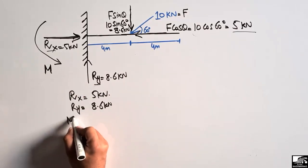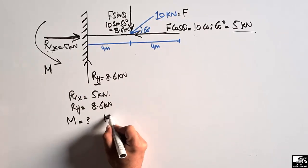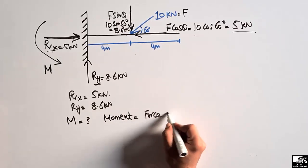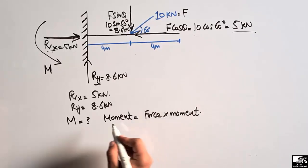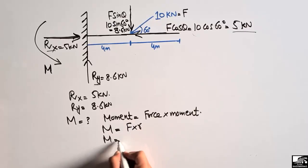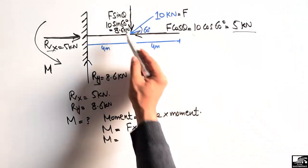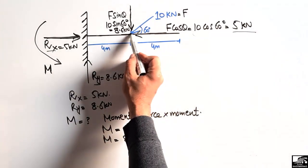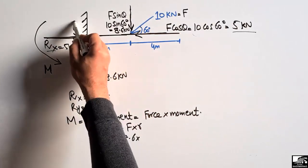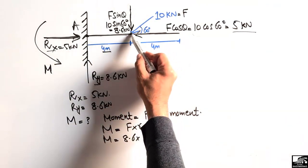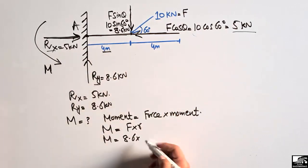Now the question is how to find the moment M. The moment is found by the formula: M = Force × moment arm. To find moment M, we use the vertical force of 8.6 kilonewtons multiplied by its distance from the support. Suppose the load is at point A — the distance from point A to the load is 4 meters, since the load is at 4 meters from the support.